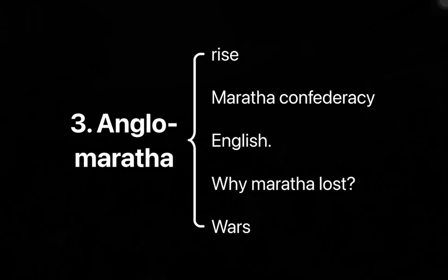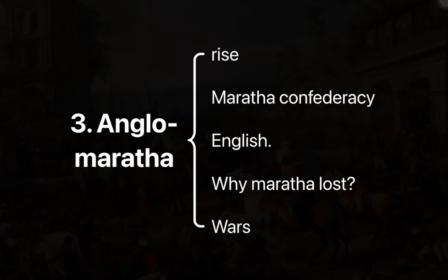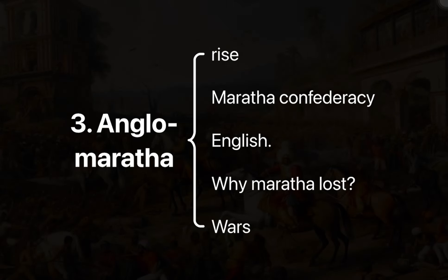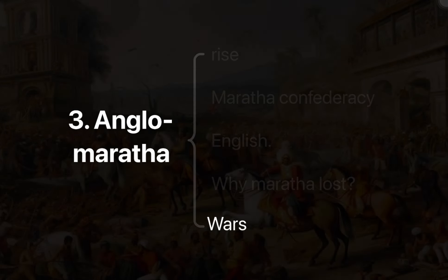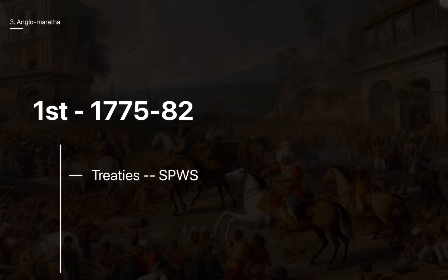Let's talk about the wars between the English and the Marathas. The First Anglo-Maratha War lasted from 1775 to 1782. As background: Madhav Rao died in 1772, and his brother Narayan Rao became the 5th Peshwa. Narayan Rao's uncle Raghunath Rao then assassinated his nephew and named himself as the next Peshwa.